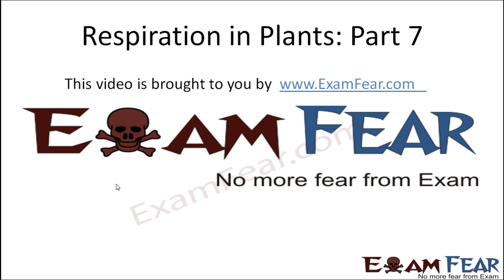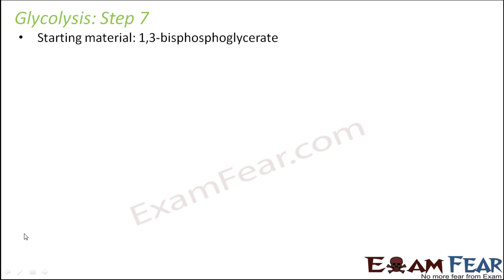This video on respiration in plants part 7 is brought to you by examfear.com. In step 7, the starting material is the product formed in step 6 — 1,3-bisphosphoglycerate — and the enzyme here is phosphoglycerokinase. Since this is a kinase enzyme, it performs phosphorylation.